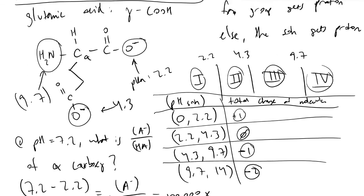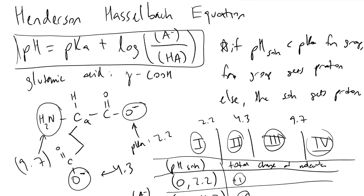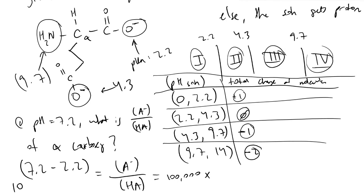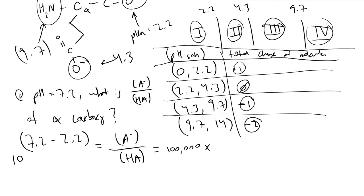This concludes how we can use the Henderson-Hasselbalch equation in practice to derive these relationships, as well as how these molecules are evolving over pH. Another thing to note is this value of 100,000 is only applicable at a pH of 7.2. As we vary this quantity, as we make our solution more basic, the ratio will increase.